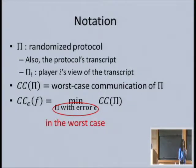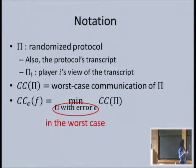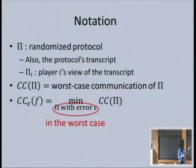That's maybe not a very natural problem to look at, but using two-player reductions, you can address more natural problems like set intersection—finding all coordinates in the intersection of everyone's sets. But set disjointness is not symmetric enough to do this.